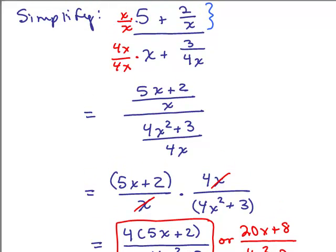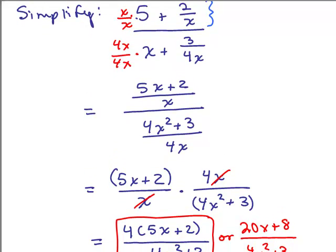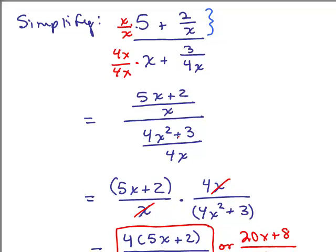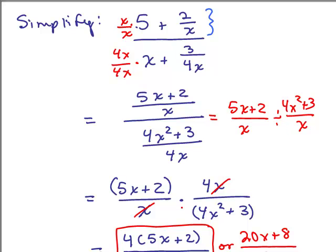So that's Method 1: simplify the numerator and denominator so each is a single fraction, then multiply by the reciprocal. Keep in mind this works because the whole expression means (5x + 2)/x divided by (4x² + 3)/4x, and when you divide by a fraction you multiply by the reciprocal.